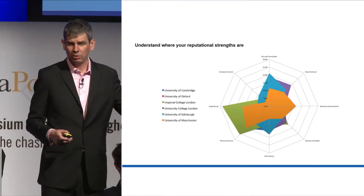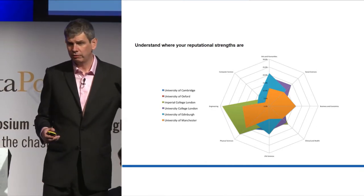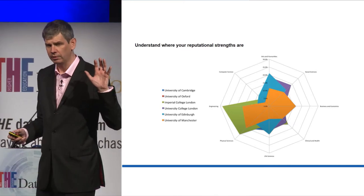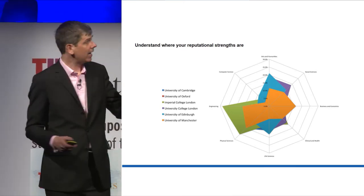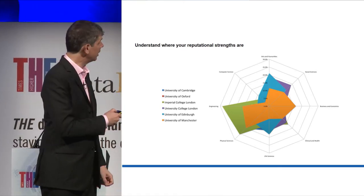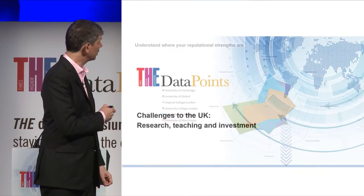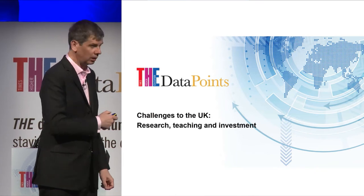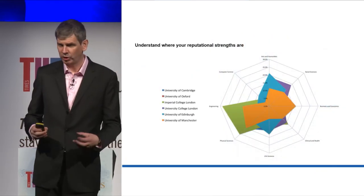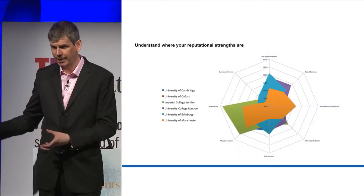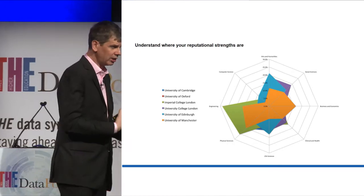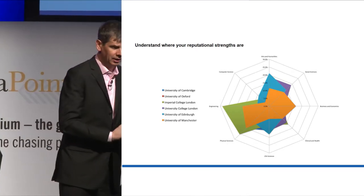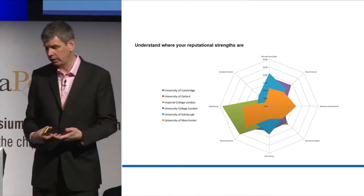If I were to show you Asian universities, we would see something very different. When we look at Asian universities, we see a very teardrop-shaped pull into engineering. Arts and humanities and social sciences get very little look-in in the Asian market.